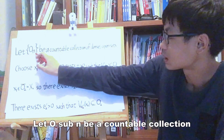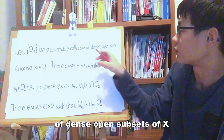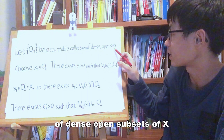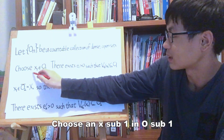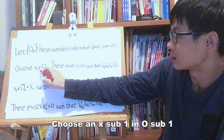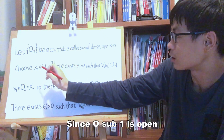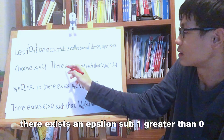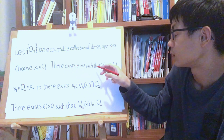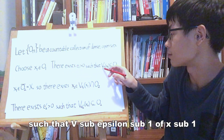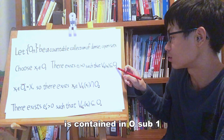Let O_n be a countable collection of dense open subsets of X. Choose an x_1 in O_1. Since O_1 is open, there exists epsilon_1 greater than 0 such that V_epsilon_1(x_1) is contained in O_1.